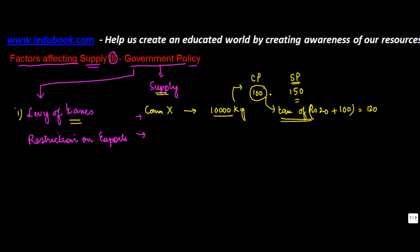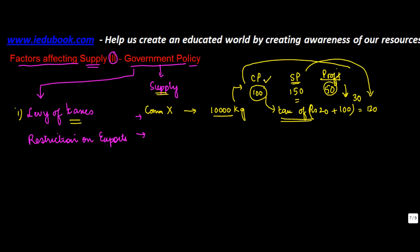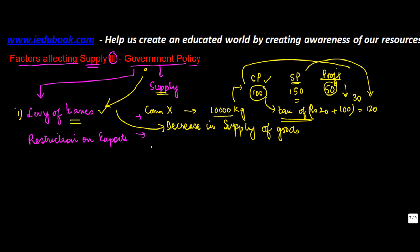As the cost of production increased from 100 to 120, the profit — originally 150 selling price minus 100 cost price — was 50 rupees. But as the cost of production increased to 120, the profit will fall from 50 to 30, which is 150 minus 120. So, decrease in profit or increase in cost of production because of levy of taxes is going to result in decrease in supply of goods. The change in government policy — levying an additional tax — resulted in decrease in supply of goods.